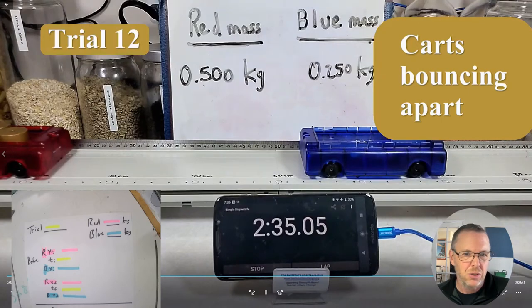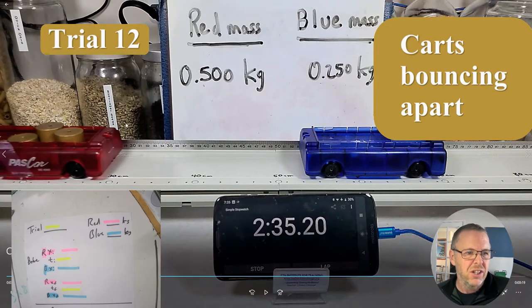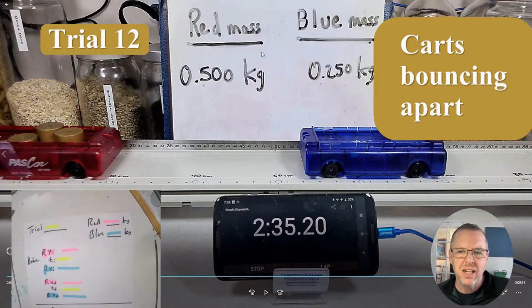Okay so here is trial 12 so you'll notice that the trial number is always up here the masses are always listed here and the description of what's happening is right here. The timer is here and in the timer we don't need the minutes we only need the seconds and the decimal seconds.